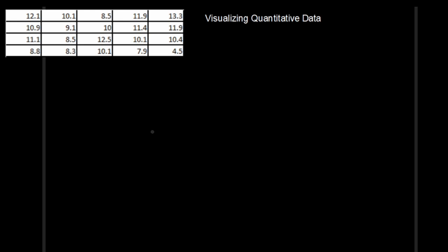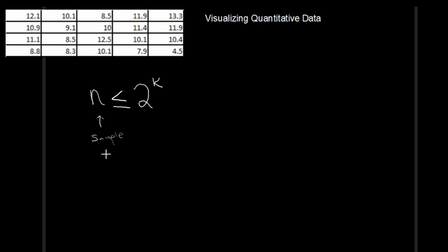There's a trade-off between these two extremes: using two bins or, at the other extreme, using 20 bins for 20 data points — either case would be a little ridiculous. To figure out the ideal number of bins, we use a guideline called the rule of 2 to the K. This rule states that we want a value K such that our sample size n is less than or equal to 2 to the K.